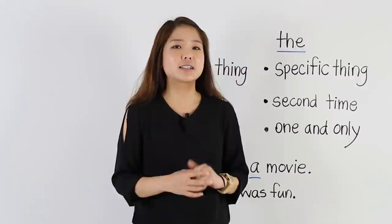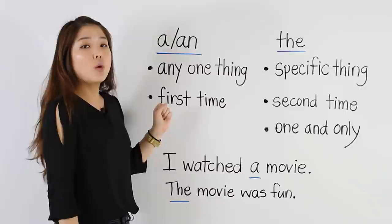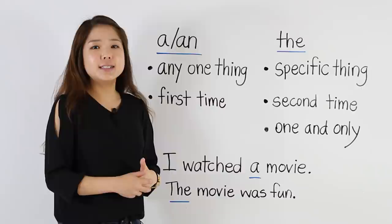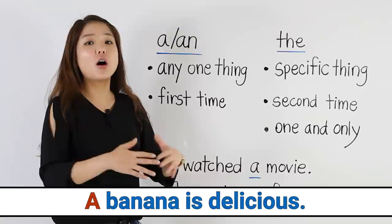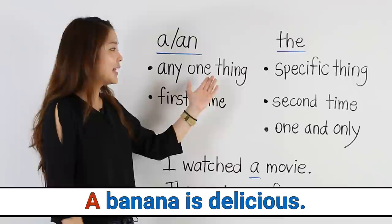First, we use a or an when we're talking about any one thing. For example, a banana is delicious. That means all bananas — any banana is delicious.